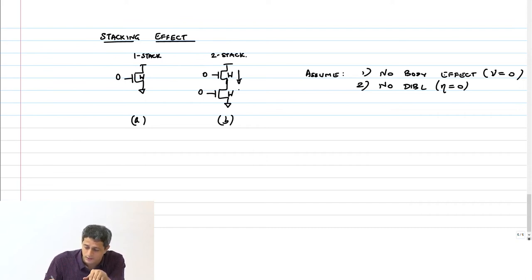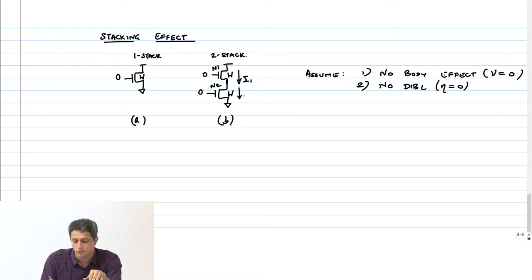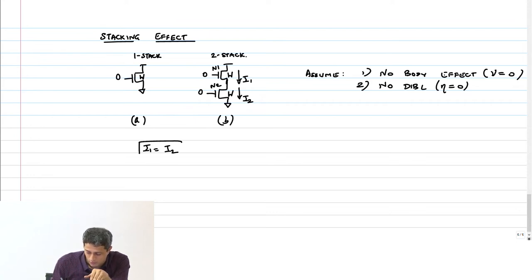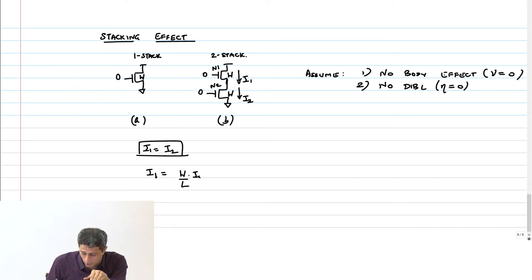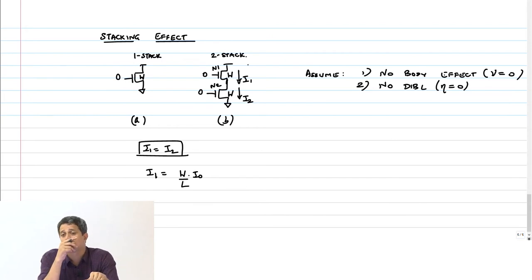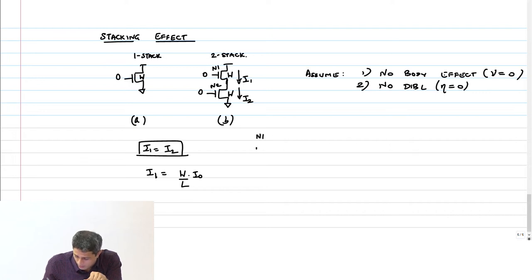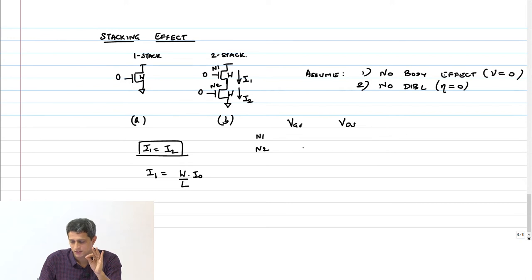Assume N1 is the top transistor and N2 is the bottom. Current through N1 is I1, current through N2 is I2. The constraint is I1 must equal I2. The intermediate node between them is called V_X. What is V_DS of N2? It is V_X. What is V_GS of N2? It is 0 — gate is grounded, source is also grounded.